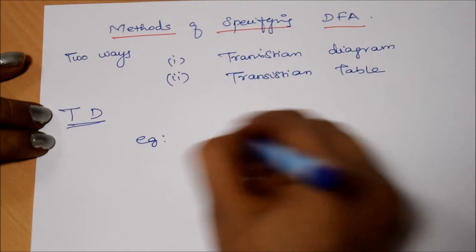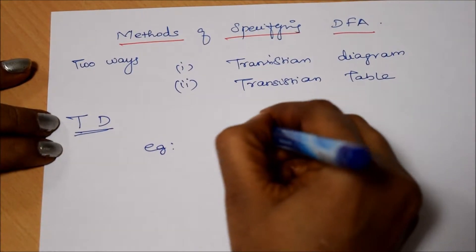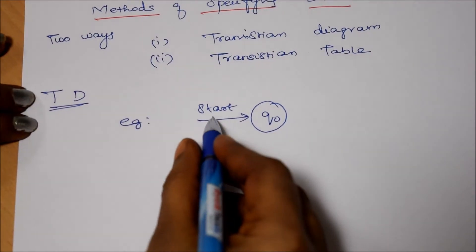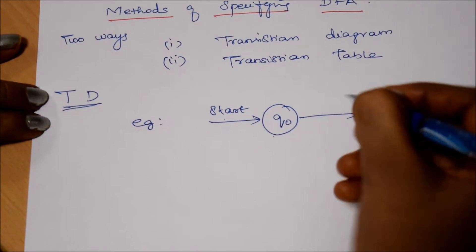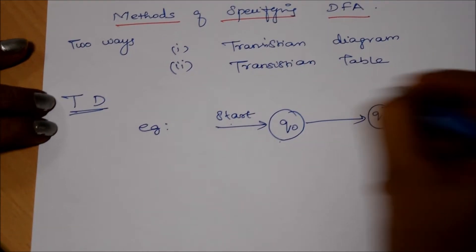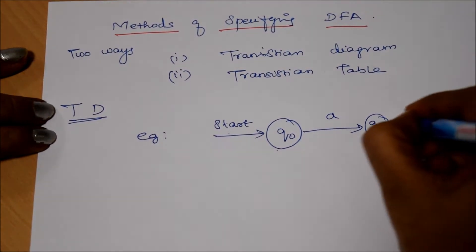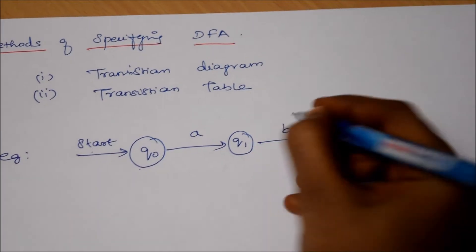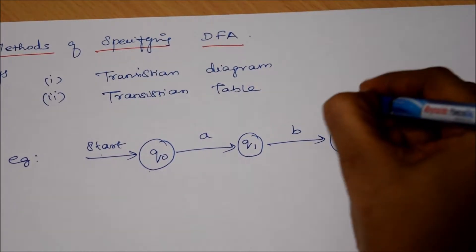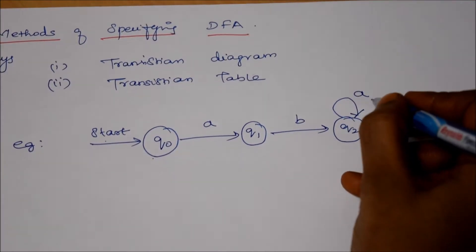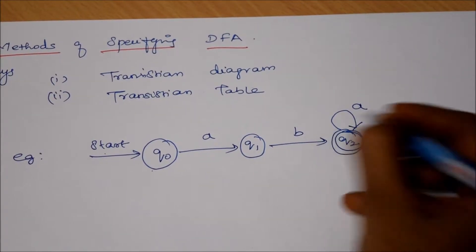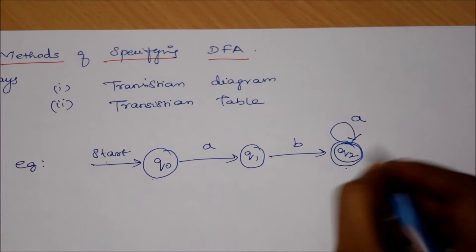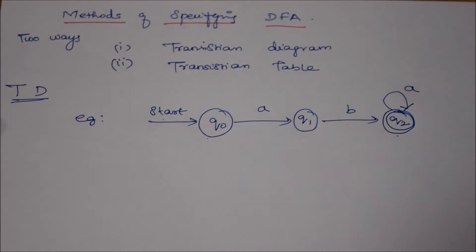For example, this is the start state — we always start at Q0, the initial state. Q0 is going to another state Q1 with string value A. It is going to Q2 with string value B. Within state Q2 the string A is a self-loop. This is the final state, so we represent it with a double circle.